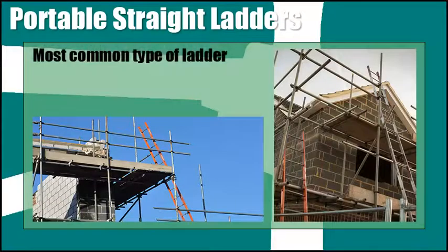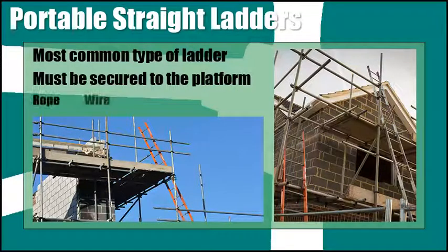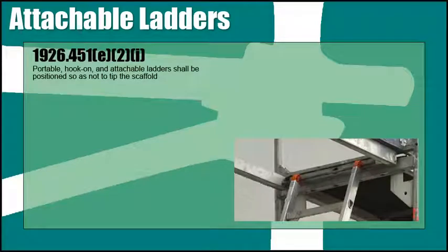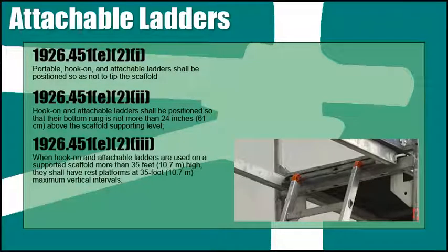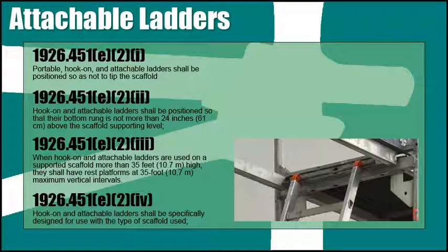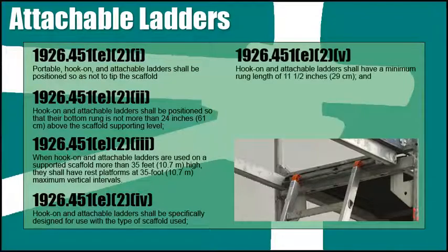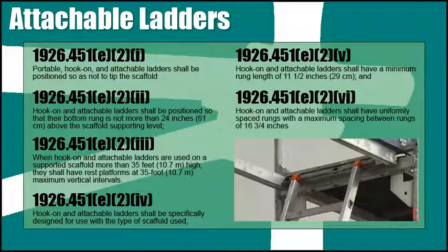A straight ladder is the most common type of ladder used to access supported scaffolding. They are easily moved, but they do need to be secured to the platform by rope, wire, or other effective means. Portable, hook-on, and attachable ladders shall be positioned so as to not tip the scaffolding over. Hook-on and attachable ladders shall be positioned so that their bottom rung is not more than 24 inches above the scaffold supporting level. When used on supported scaffolds more than 35 feet high, they shall have rest platforms at 35-foot maximum vertical intervals. They shall have a minimum rung length of 11 and a half inches, and uniformly spaced rungs with a maximum spacing between rungs of 16 and three-quarter inches.